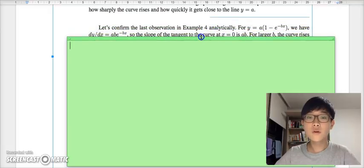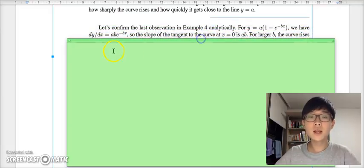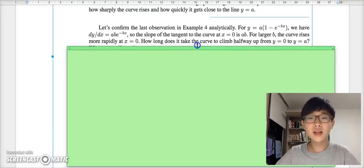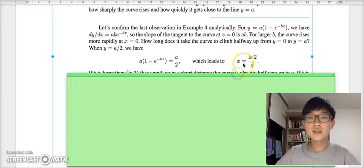Let's prove our previous discovery by using an analytical approach. For this function, the derivative would be abe^(-bx). The slope of the tangent line at x equals 0 would be ab. The larger the value of b is, the more rapid the curve is increasing. How long does it take the curve to climb halfway up from y equals 0 to y equals a? We would have to find the x coordinate when the value of y equals a/2, which leads us to ln(2)/b.